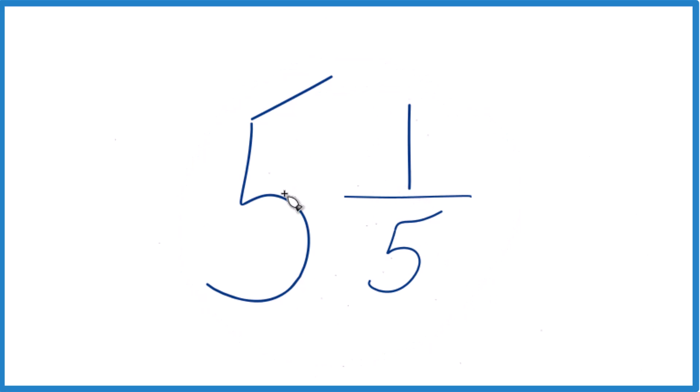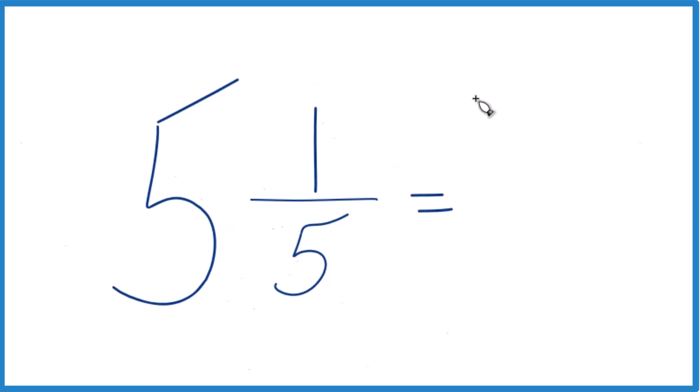Take the whole number, the 5, multiply that by 5. 5 times 5, that's 25. Then add the 1. 25 plus 1, that equals 26.